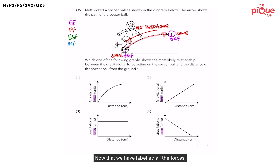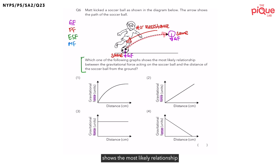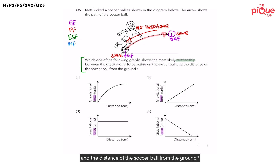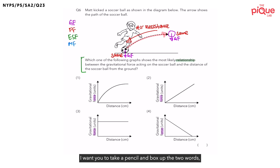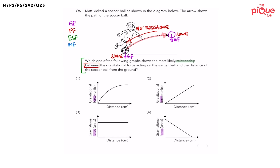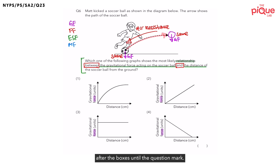Now that we have labeled all the forces, let's read the question: Which of the following graphs shows the most likely relationship between the gravitational force acting on the soccer ball and the distance of the soccer ball from the ground? Relationship questions are experimental type questions, so we can spot the changed and measured variable. Take a pencil and box up the two words between 'between' and 'and', and underline everything that comes after the boxes until the question mark. The phrases underlined will either be the changed variable or the measured variable.